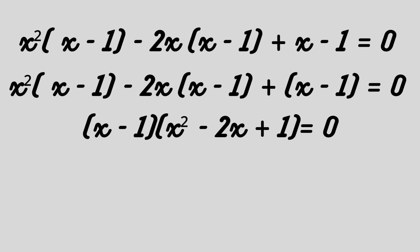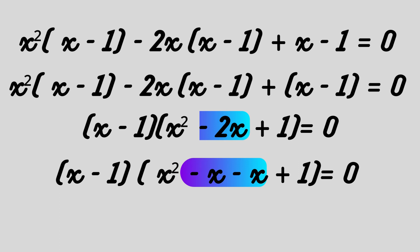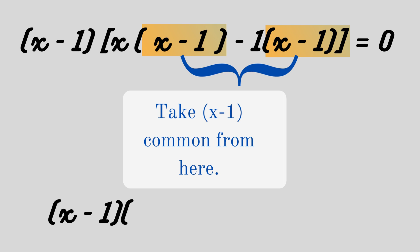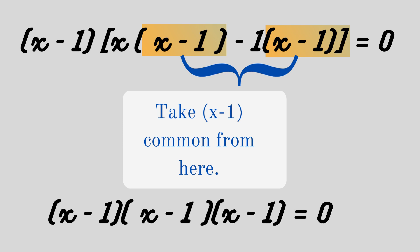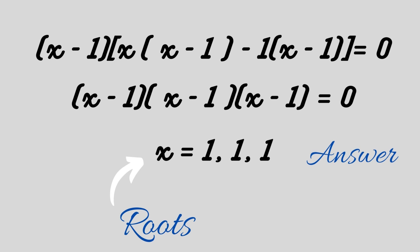We now have the quadratic factor x² - 2x + 1, which can be solved easily. Writing -2x as -x - x, the equation becomes (x - 1)(x² - x - x + 1) = 0, which factorizes to (x - 1)(x - 1)(x - 1) = 0. So the three roots of this cubic equation are x = 1, 1, 1.